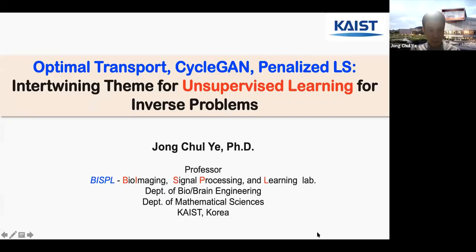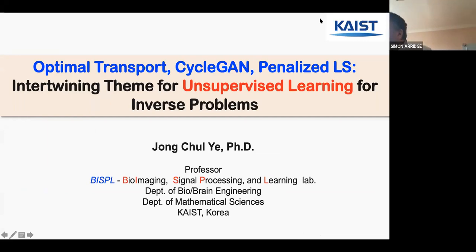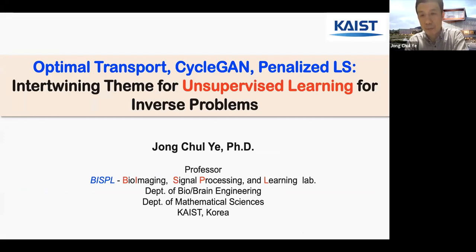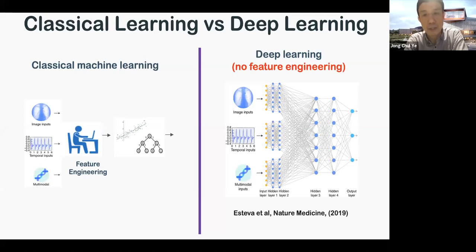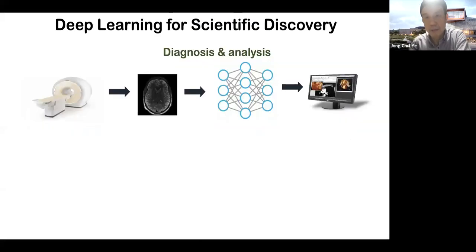Thank you very much for the kind introduction. Deep learning has a lot of advantages compared to classical machine learning approaches. In classical machine learning, we usually need feature engineering to extract features to fit into a simple classifier, for example, a support vector machine. But in deep learning, we don't need that kind of feature engineering — you can automatically extract features and design the classifier. Because of this simplicity, deep neural networks have been widely used for various applications, in particular medical imaging and inverse problems.